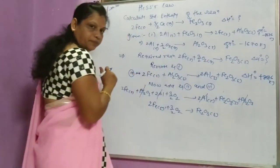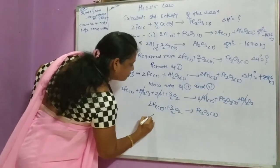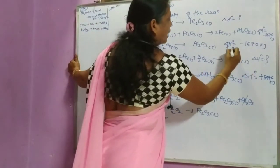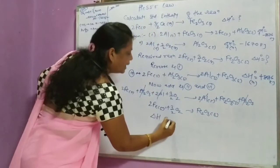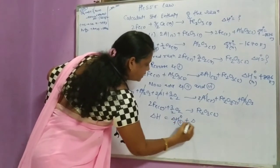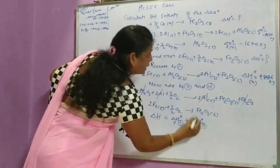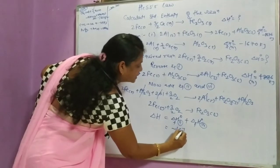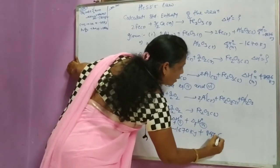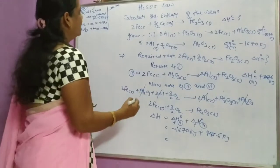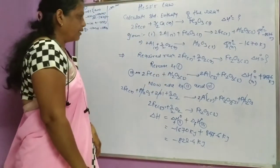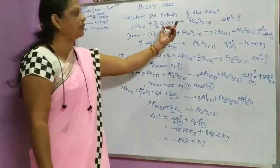This is the required equation. For this reaction, ΔH equals ΔH2 plus ΔH3. That is ΔH2 = −1670 kJ plus 847.6 kJ. On calculation, that gives −822.4 kJ. This is the standard enthalpy for the given reaction.